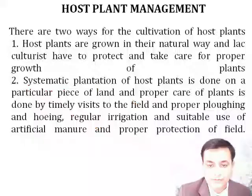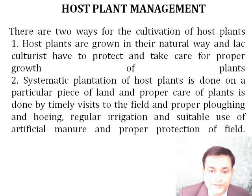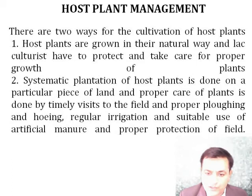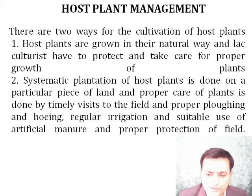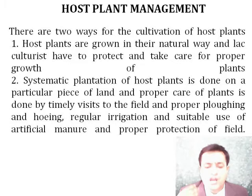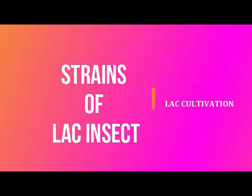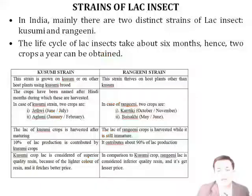There are mainly two ways for the cultivation of host plants. The first is the natural way, where host plants grow naturally and lac culturalists protect and take care of them for proper growth. The second is the artificial way, where systematic plantation of host plants is done on a particular piece of land with proper care, including artificial irrigation, manure, and protection of the field.